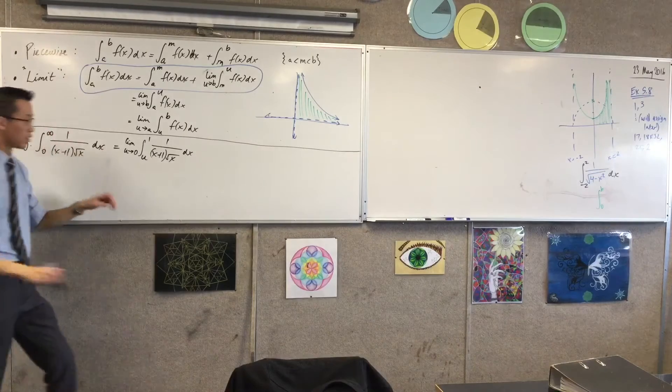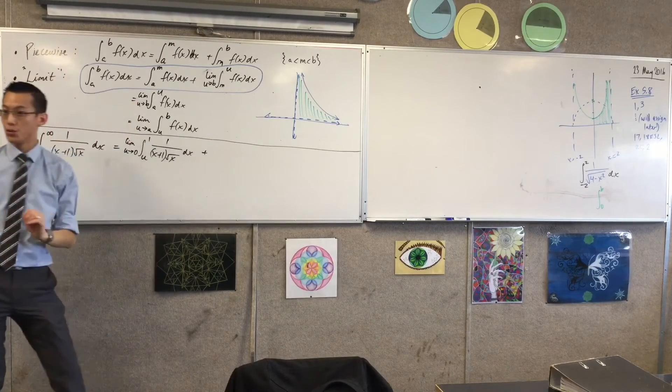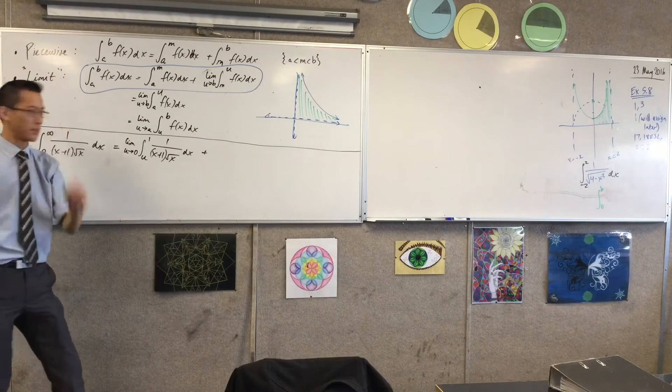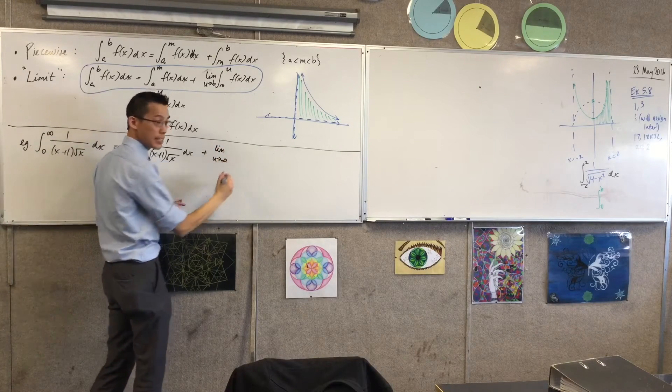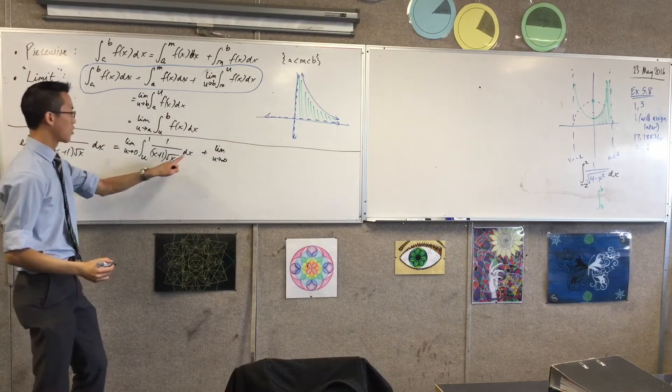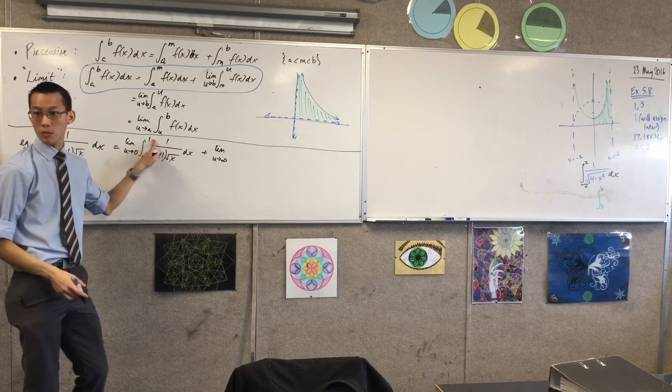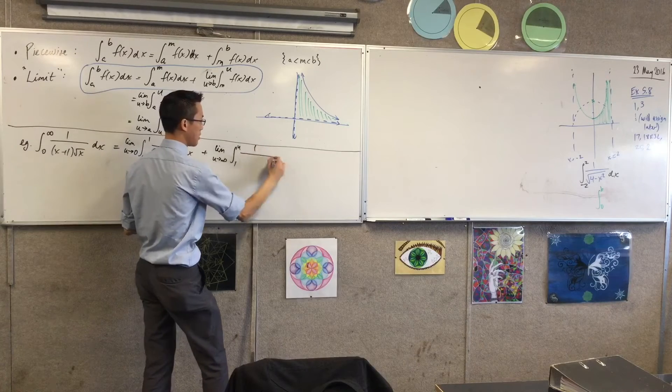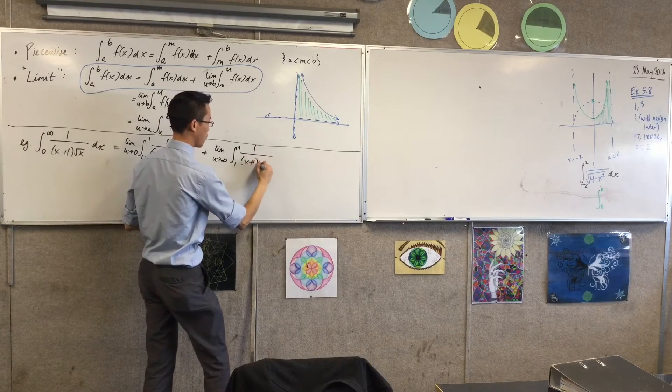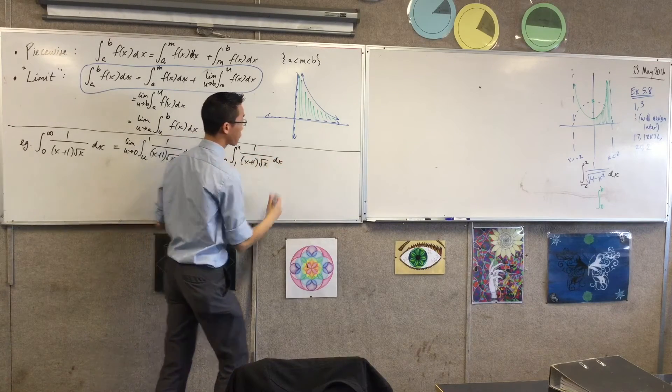There's 0 to 1, kind of. Now I'm going to do 1 to infinity, kind of. So I'm going to go limit as u approaches infinity, but I've now got the upper boundary is the one that I'm replacing with the limit. So now I'm going 1 to u, and it's the same integrand.